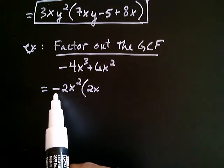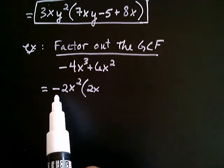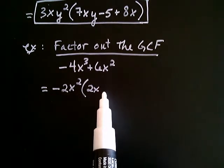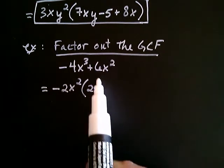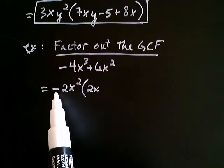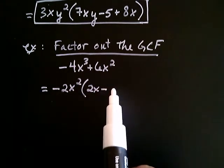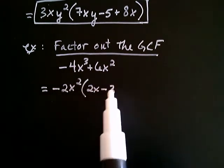Remember, you're distributing the negative two x squared. And, you're trying to get to a positive six x squared. So, should this be positive or negative? Well, you're trying to get to a positive and you're multiplying by a negative. So, this has to be a negative. Well, a negative what? A negative three.